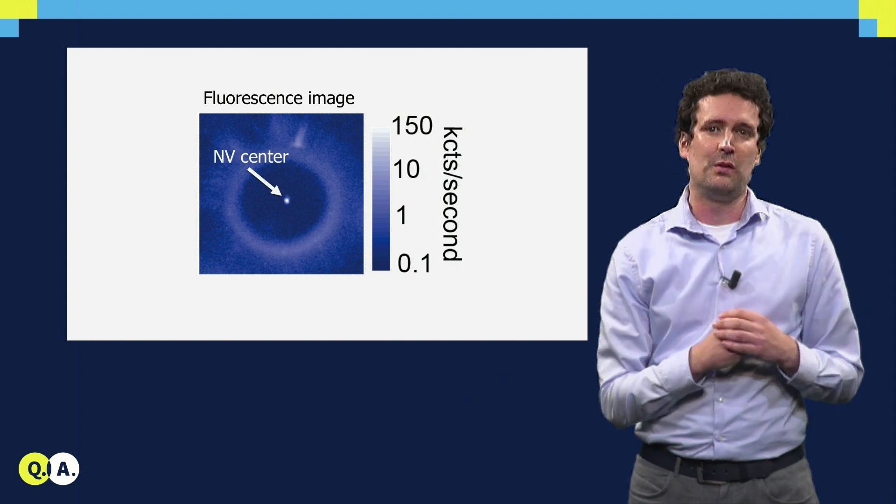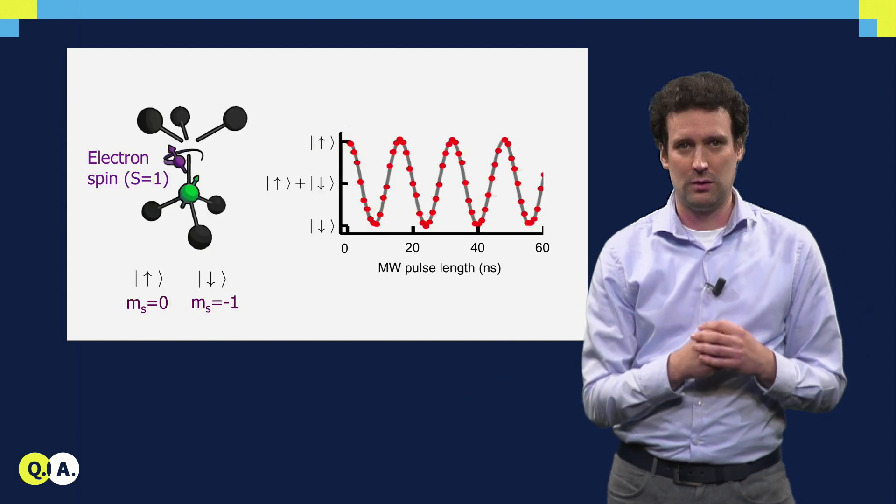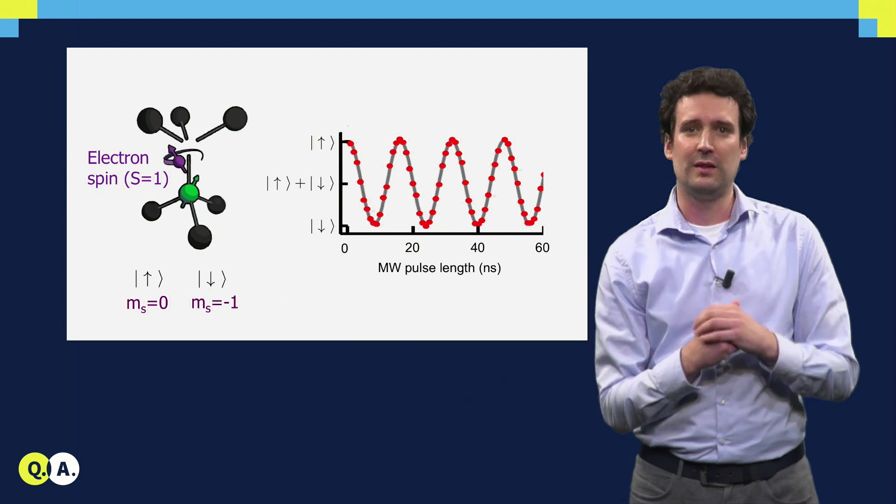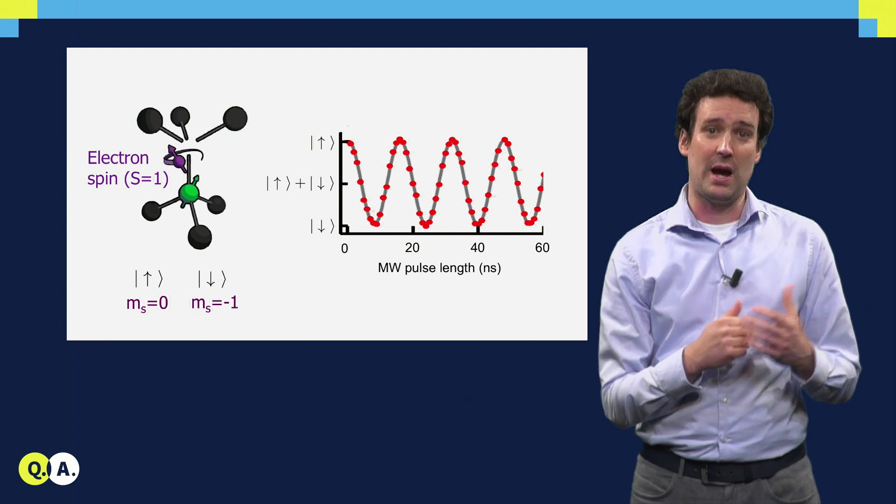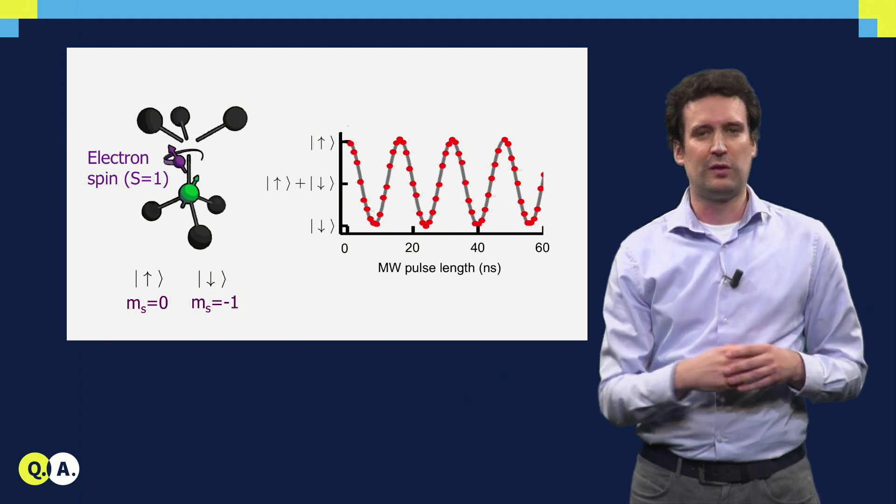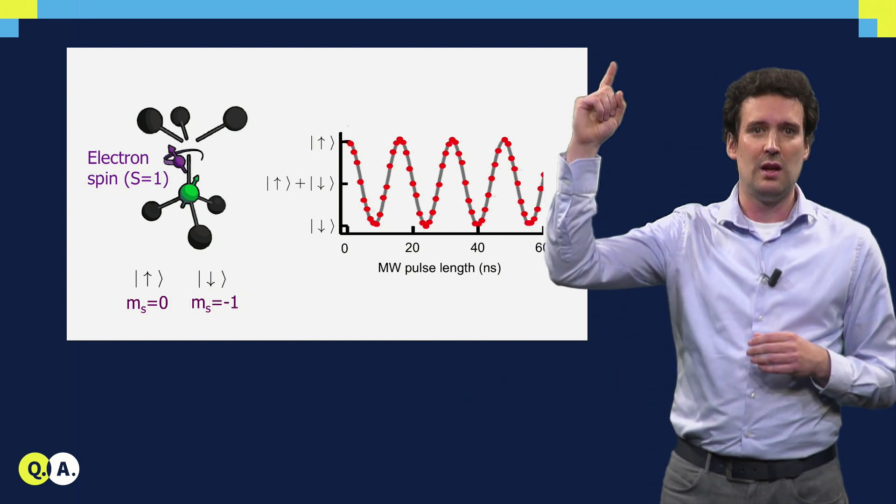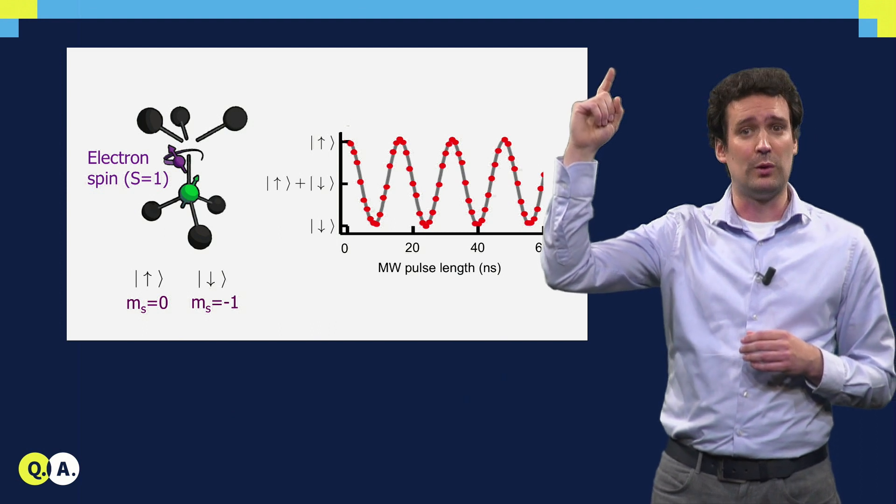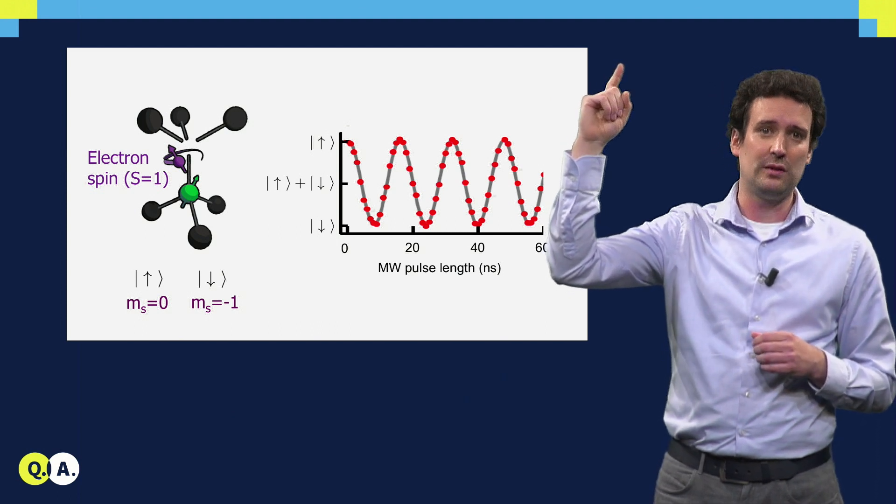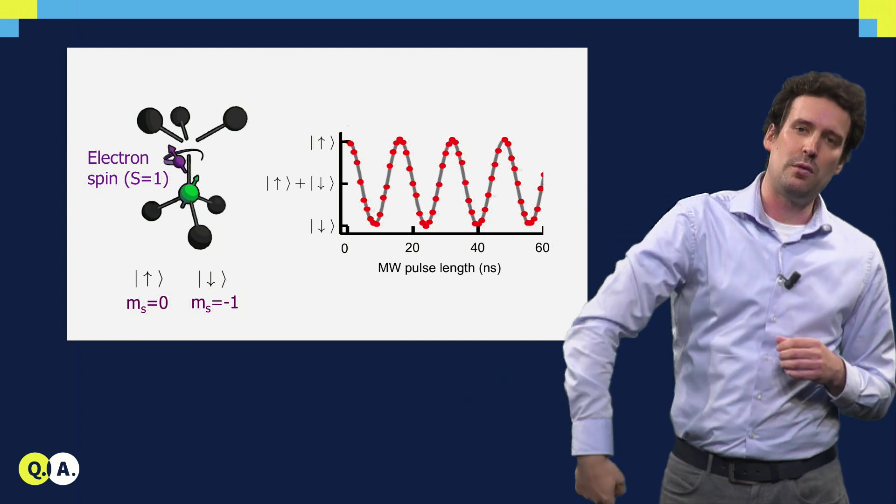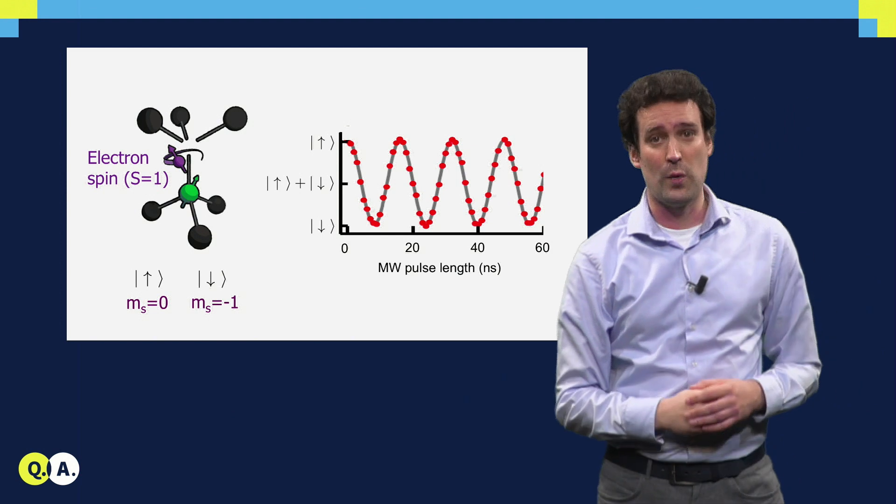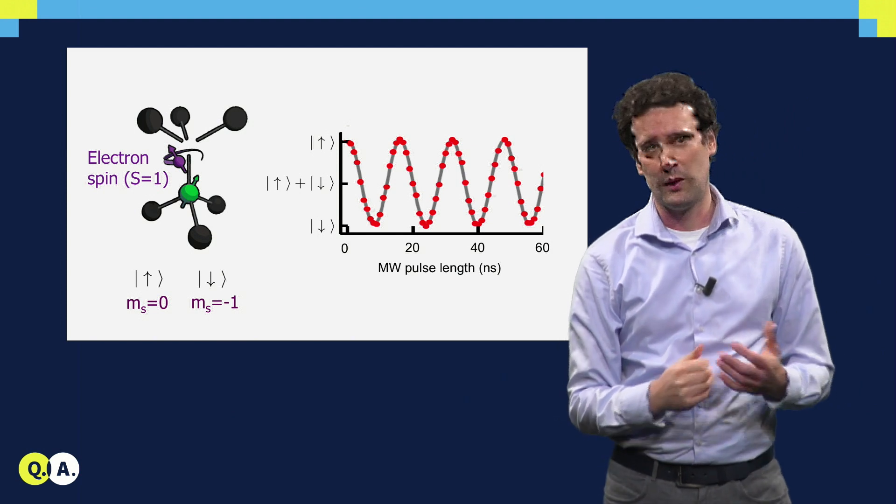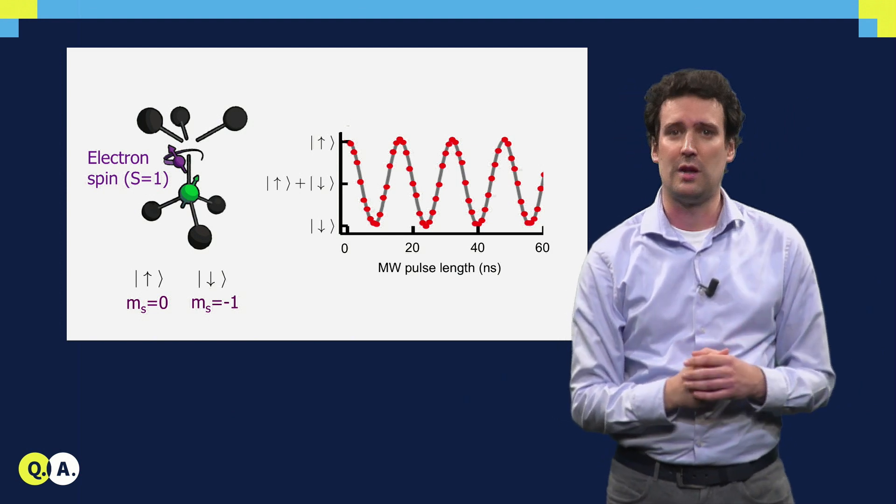The electronic spin of the NV is actually a spin 1, and to use it as a qubit we just select two levels, and we can control this spin by applying microwave pulses. If we start with the spin pointing upwards and we apply a microwave pulse of variable lengths, we can see that the spin rotates from up to down and then back up again in a coherent fashion. And exactly halfway in that rotation, you have created a quantum superposition of spin up and spin down.